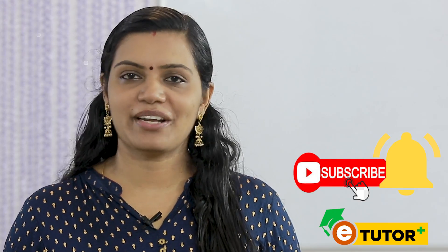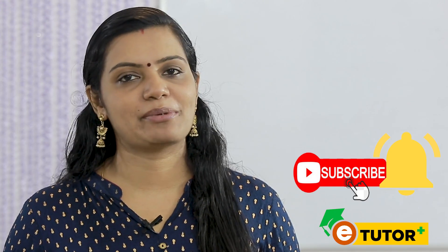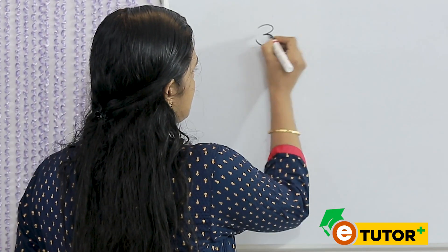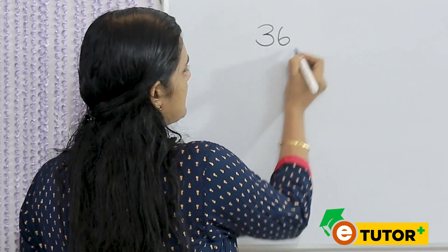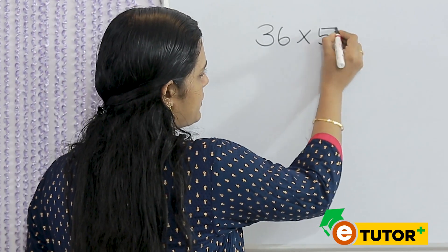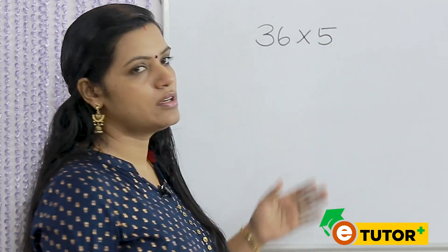Please press the bell icon. I will tell you how to try everything in 20 minutes. One number is 36. We will multiply with 36.